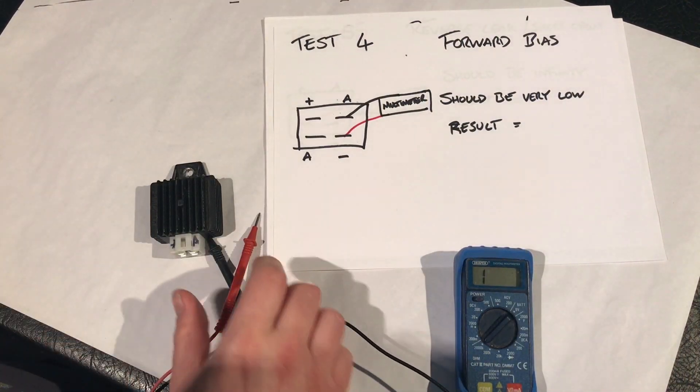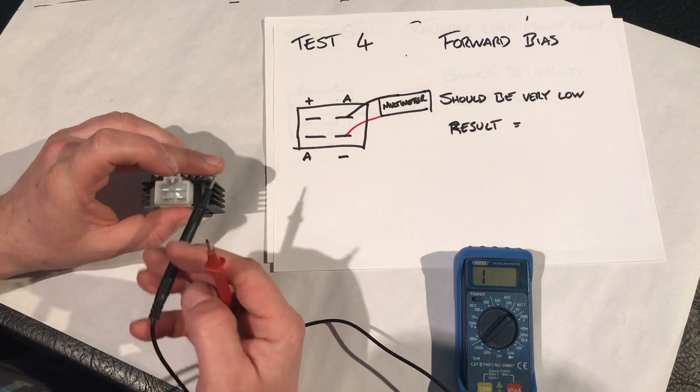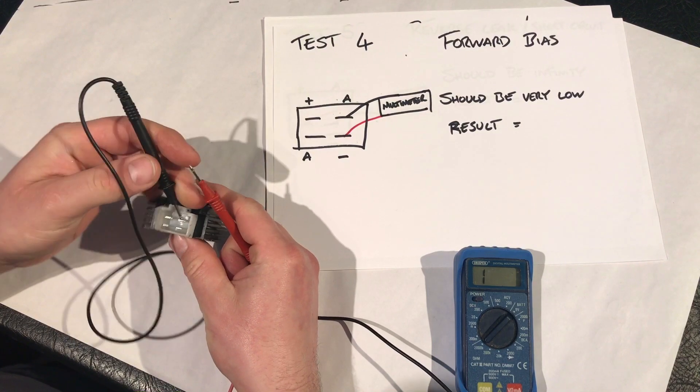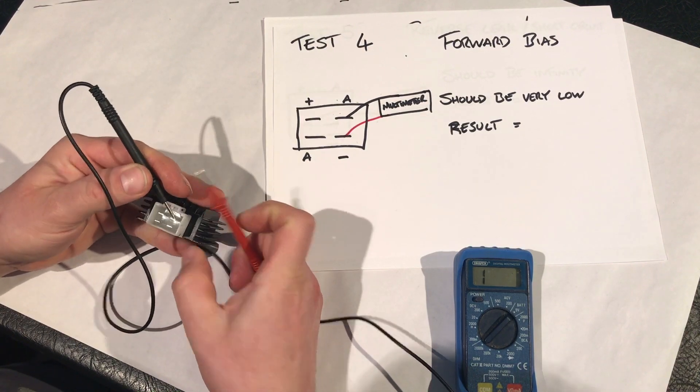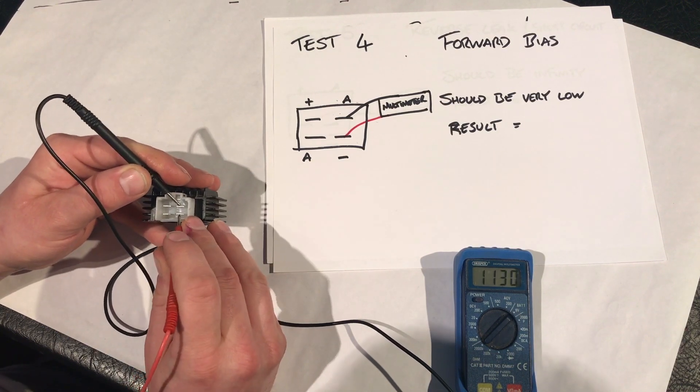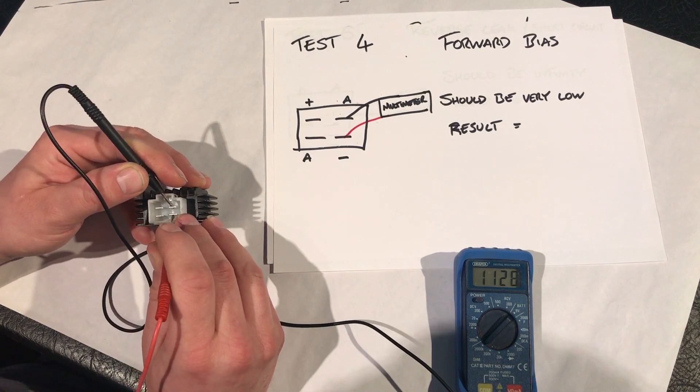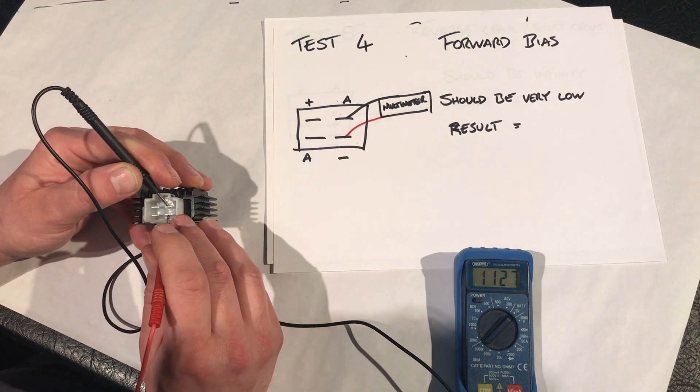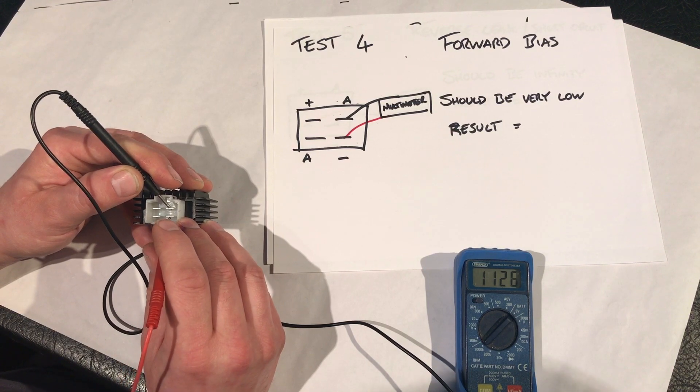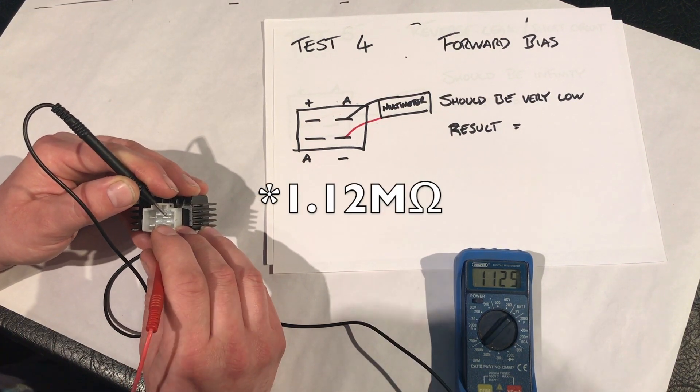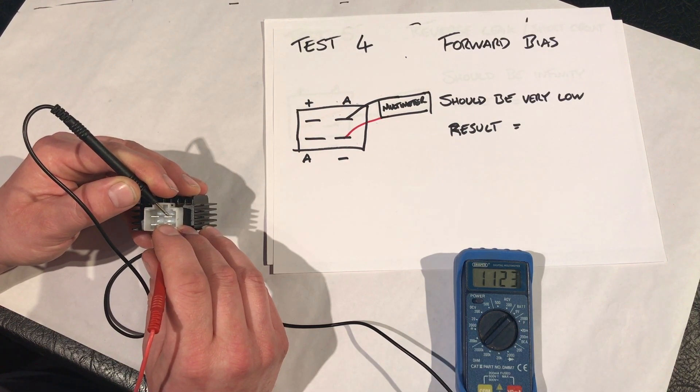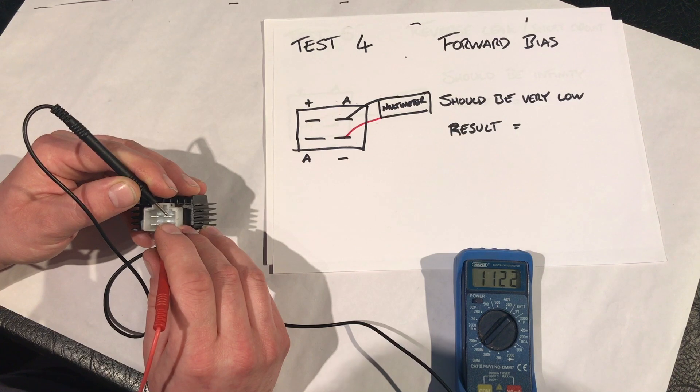Test four. Same one again. But this time we're swapping the anode cathodes over. So the negative onto your alternator, and the positive onto the battery negative or earth connection. And as you can see, that one's a really high reading. 1128. Okay, so that does seem extortionately high. So that's what, 112 mega ohms resistance. And that's virtually no power flow whatsoever.